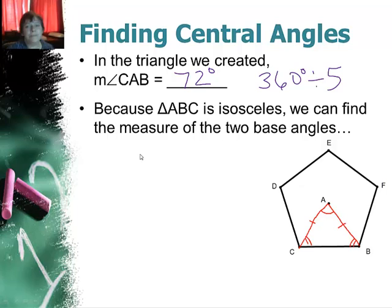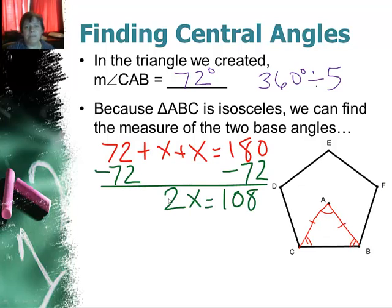So I know that this is 72 and these two I'm going to call X. So I could say 72 plus X plus X equals 180. Subtract 72 from both sides and I get 2X equals 108.